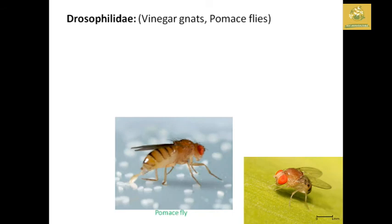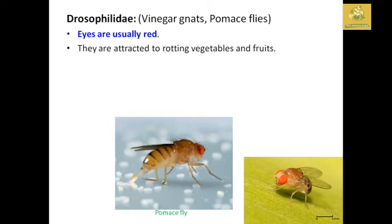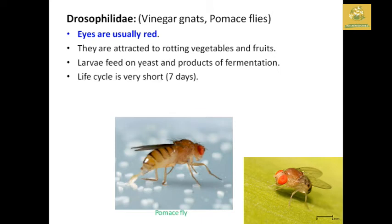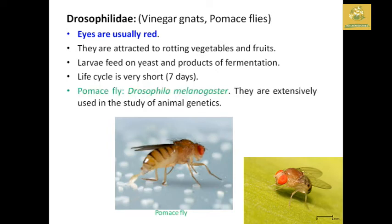Drosophilidae — vinegar flies, also known as pomace flies. The eyes are usually red and they are attracted to rotting vegetables and fruits. The larva feeds on yeast and products of fermentation. The life cycle is very short — only seven days. The pomace fly Drosophila melanogaster is the scientific name, and it is extensively used in the study of animal genetics.